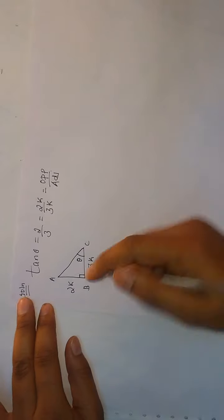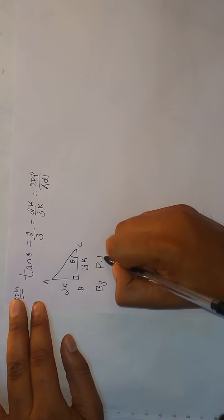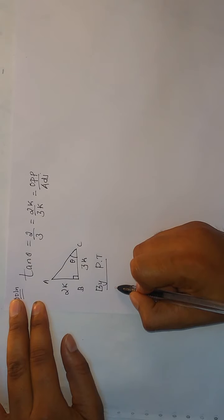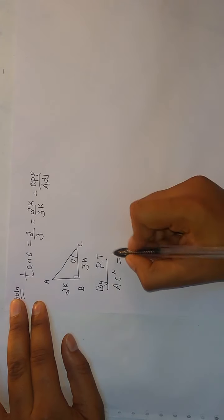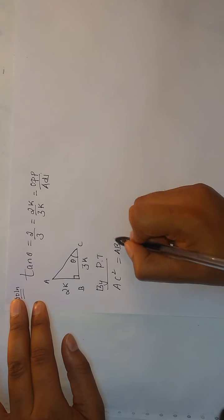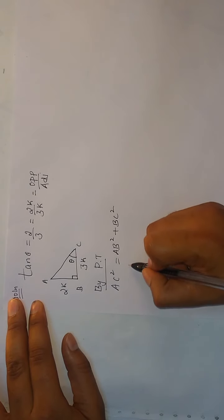Now using Pythagorean theorem, hypotenuse can be found. Pythagorean theorem: hypotenuse square, AC square, equals sum of the squares of other two sides, AB square plus BC square.